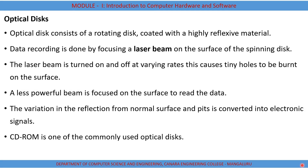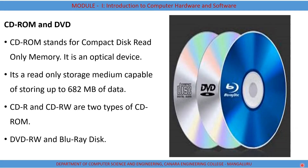CD-ROM, or Compact Disk Read-Only Memory, is a type of optical disk that uses laser technology to read and write data onto the disk. A single CD-ROM can store a large amount of data, but once information is stored onto it, it becomes permanent and cannot be altered — meaning stored information can only be read for processing purposes. That is why it is called CD-ROM.